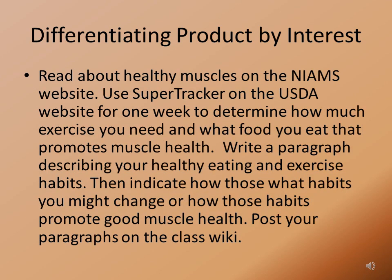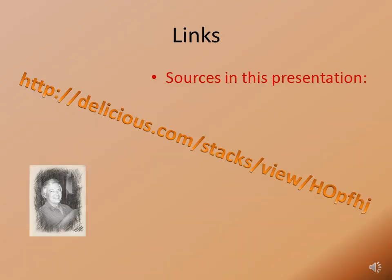In the final independent practice activity, students may be asked to differentiate product by interest using a reading from the National Institutes of Arthritis, Musculoskeletal, and Skin Diseases website and the SuperTracker website from the United States Department of Agriculture to determine their own healthy eating and physical education habits. They would then write a paragraph describing those habits and post it on the class wiki. I hope the explanation and examples in this presentation are useful to you. All links are available at http://delicious.com/stacks/view/HOPFHJ. Thank you for watching.